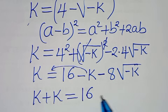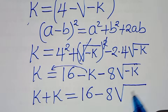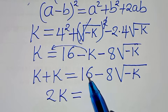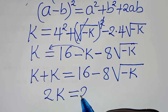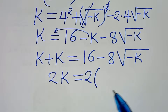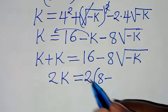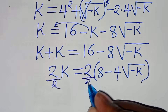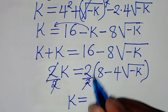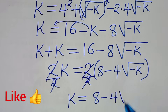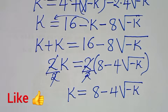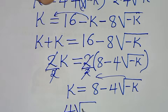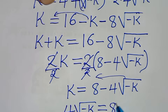So we have k is equal to 16 minus 8 square root of minus k. Now k plus k is 2k, this is equal to 16 minus 8 square root of minus k. We can factor out 2: 16 divided by 2 is 8, minus 8 divided by 2 is 4 square root of minus k. So now k is equal to 8 minus 4 square root of minus k.